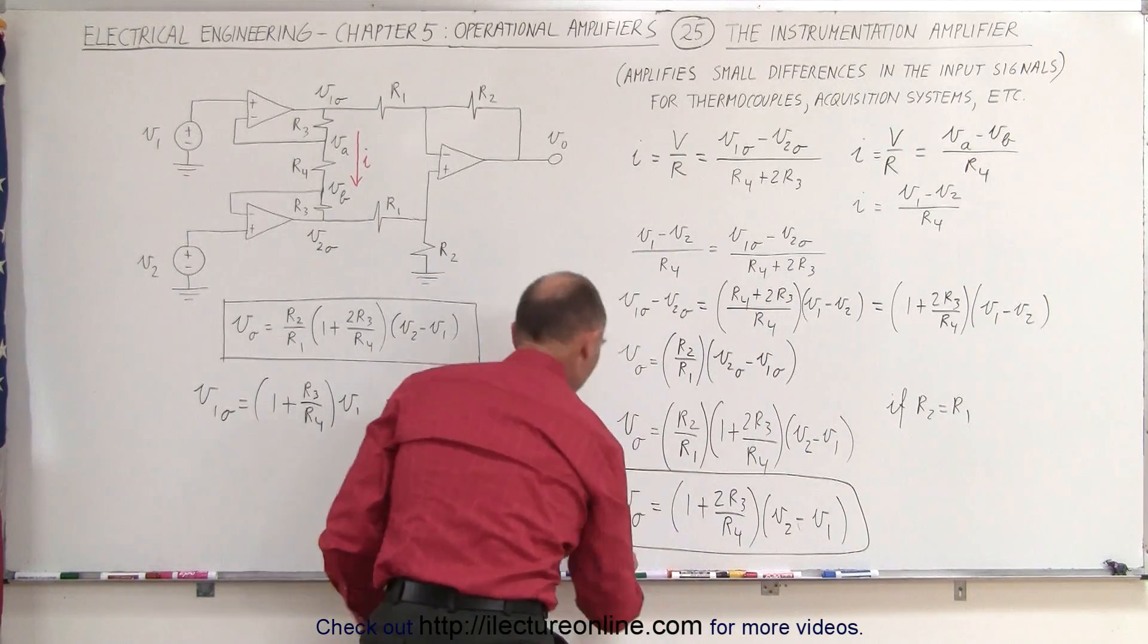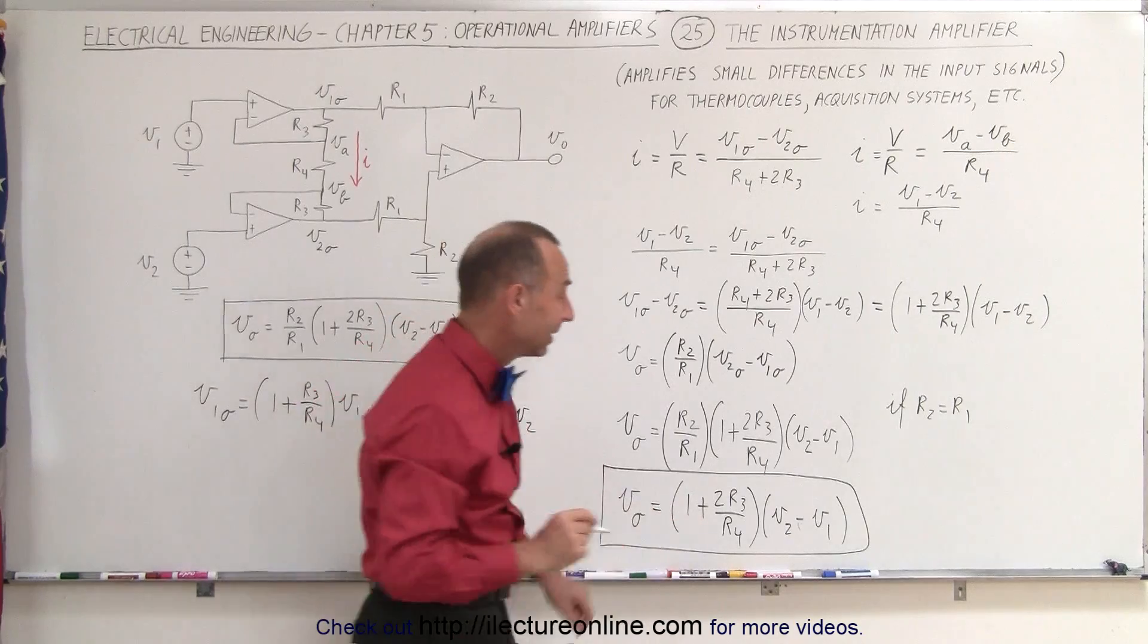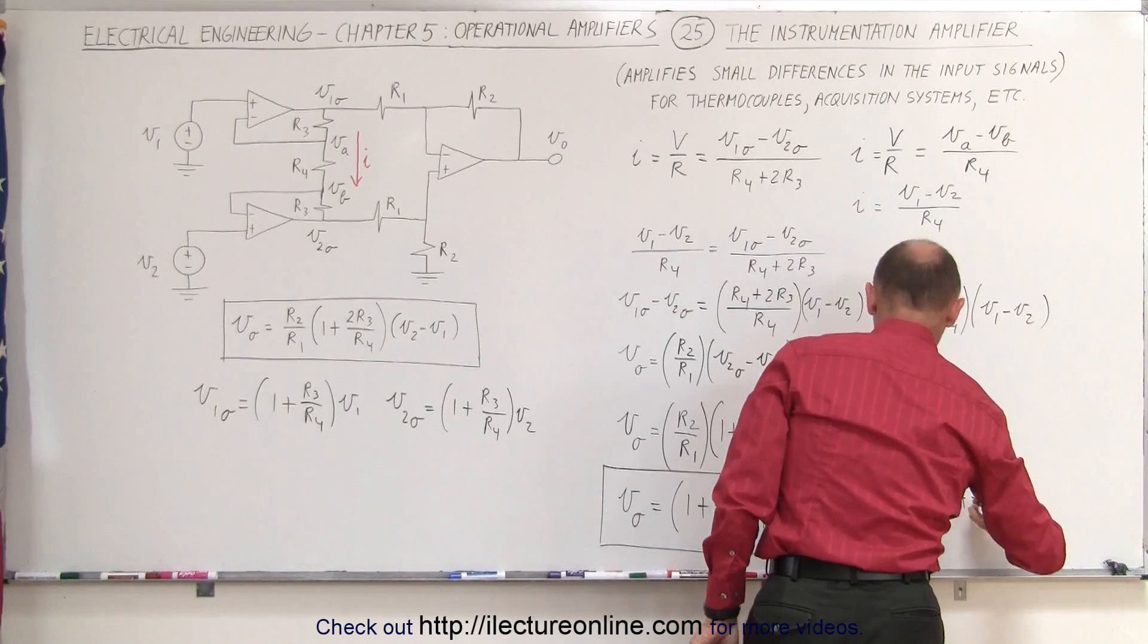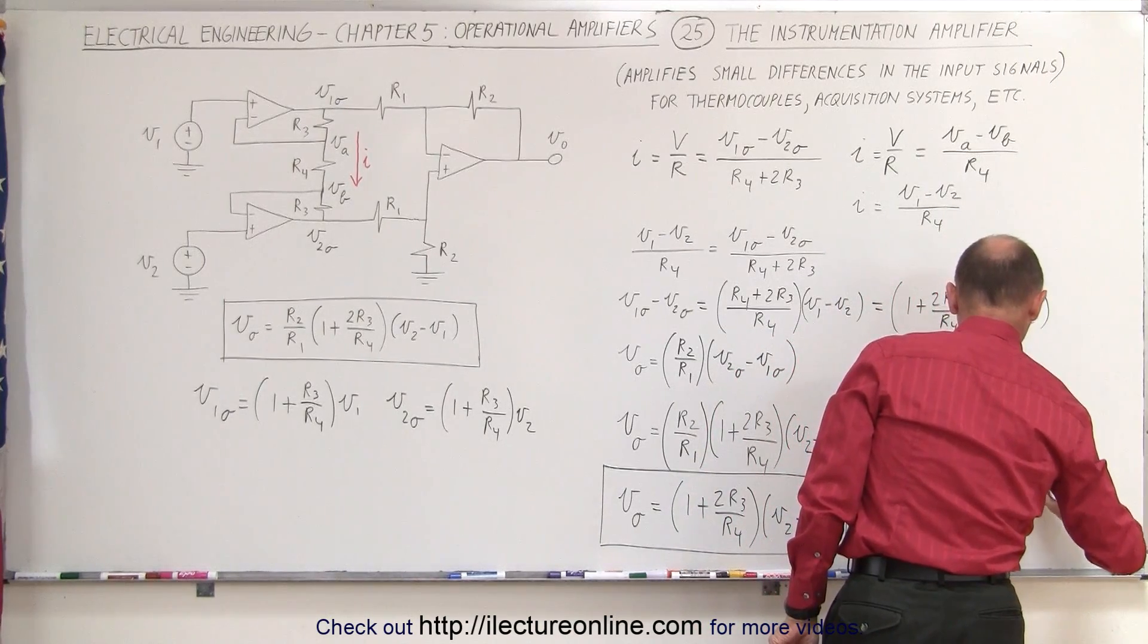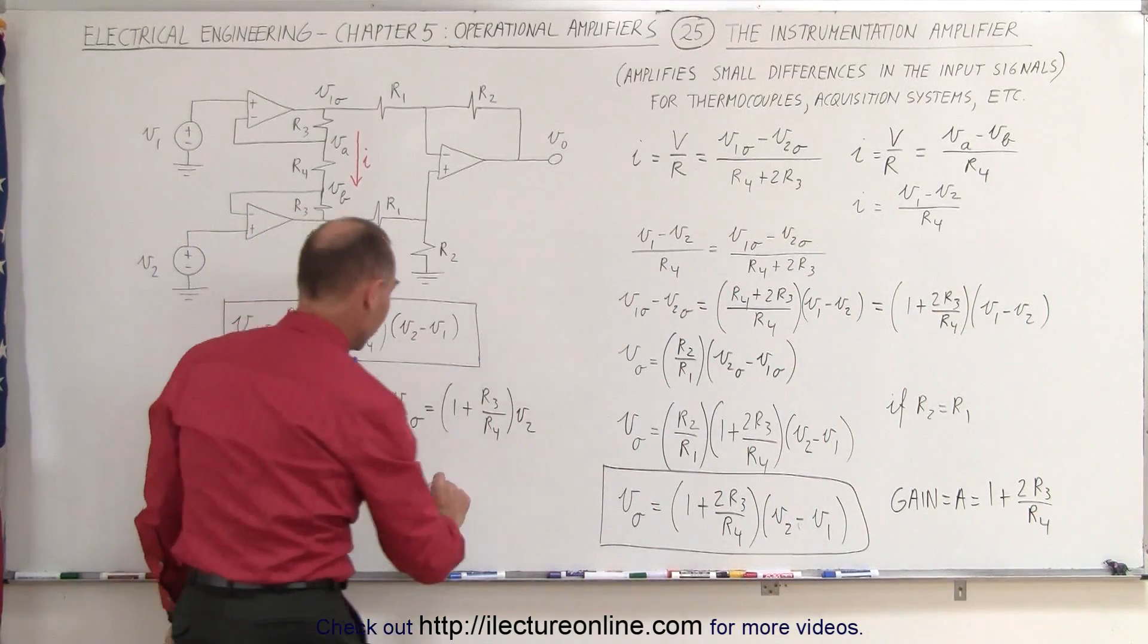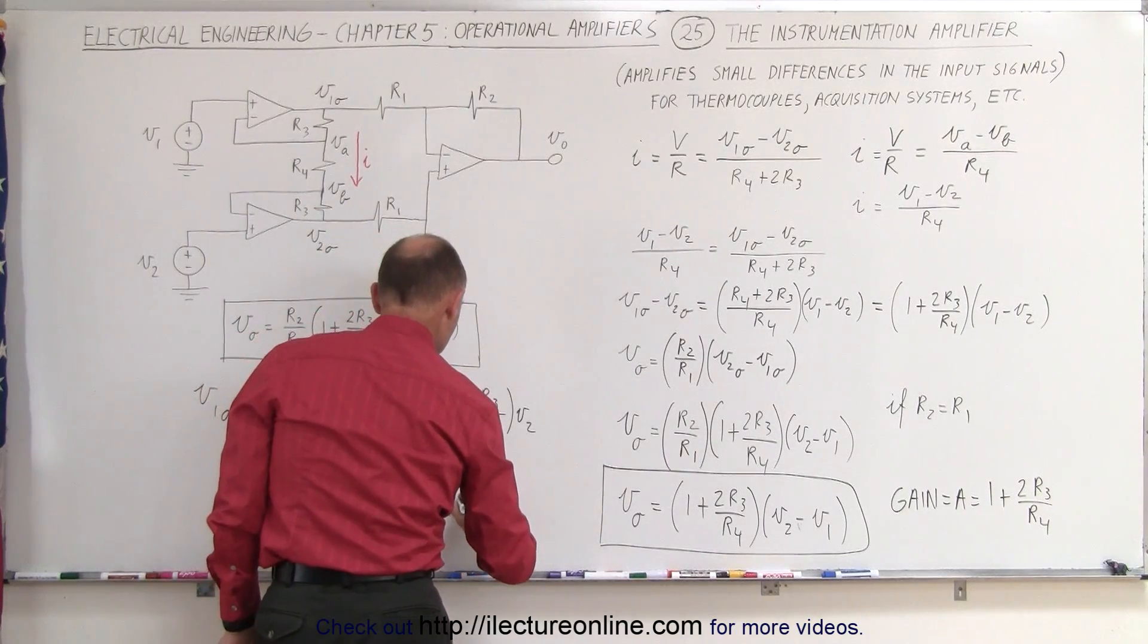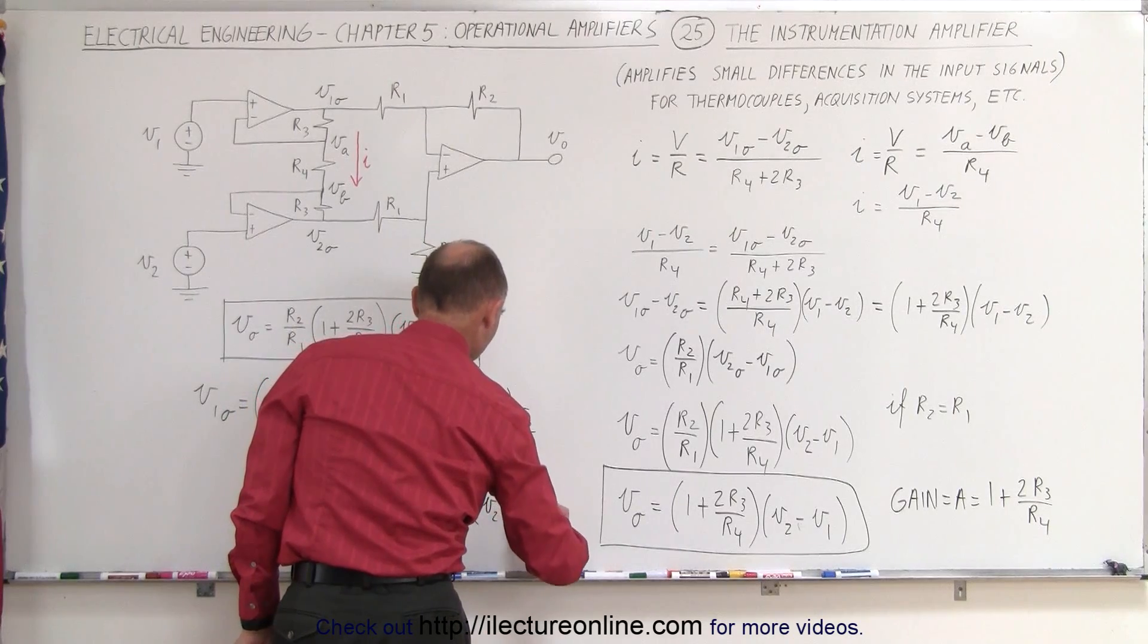And this quantity right here, 1 plus 2 times R3 divided by R4, that's called the gain. So the gain is equal to A is equal to 1 plus 2 times R3 over R4. And so finally, if you want to write it in a more simplistic fashion, you can say that the output voltage is equal to the gain times the difference of V2 minus V1.